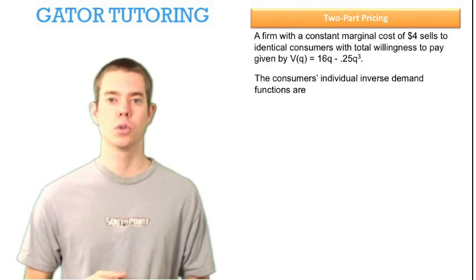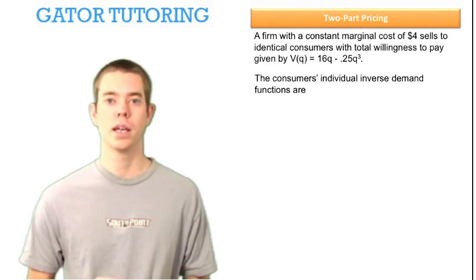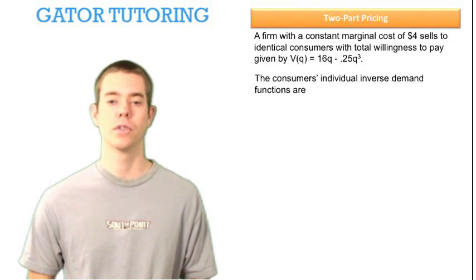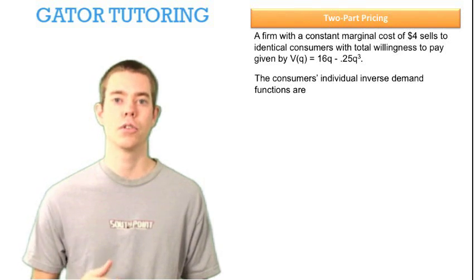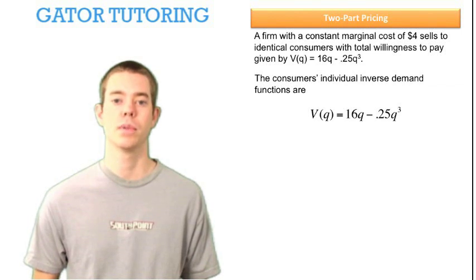The consumer's individual inverse demand functions are blank, so we need to solve for the individual inverse demand functions. The total value function tells us all of the area under the curve. When we take the derivative of the total value function, we get simply the curve, which is the inverse demand function.